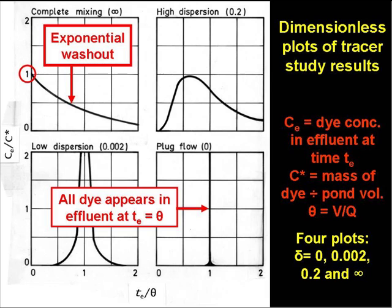With complete mixing, Ce over C star equals 1 at t equals zero. Thereafter, the dye is washed out exponentially. In complete contrast with plug flow, all the dye appears in the effluent at the same time, and this time is theta, the V over Q retention time, when the dimensionless time ratio, te over theta equals 1.